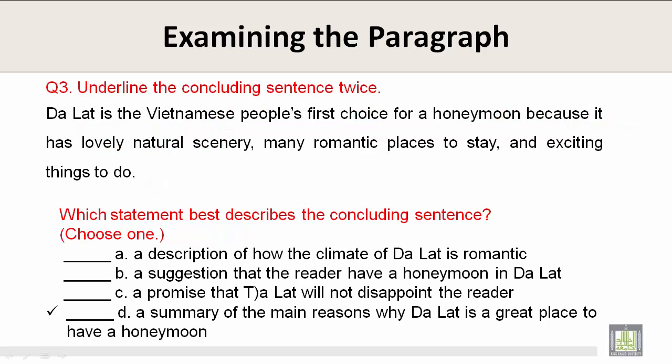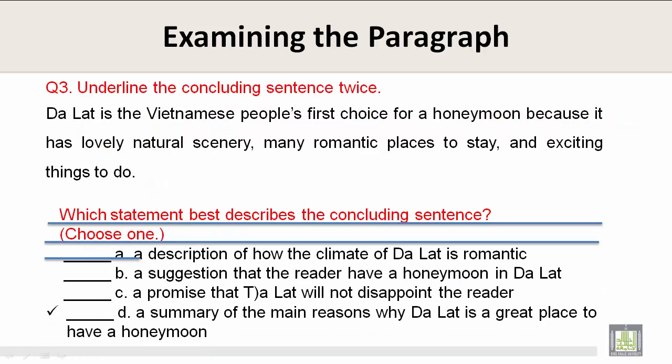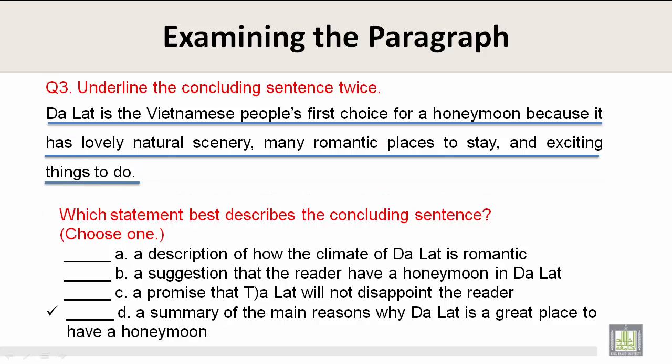Question three: underline the concluding sentence twice. Da Lat is the Vietnamese people's first choice for a honeymoon because it has lovely natural scenery, many romantic places to stay, and exciting things to do. Which statement best describes the concluding sentence? That answer would be D: a summary of the main reasons why Da Lat is a great place to have a honeymoon.